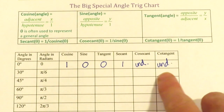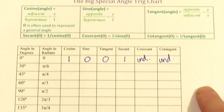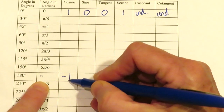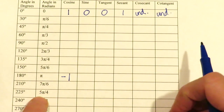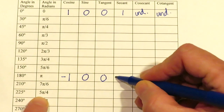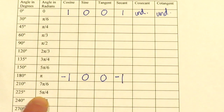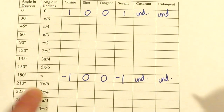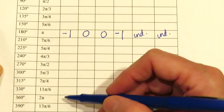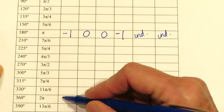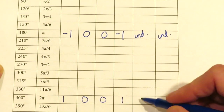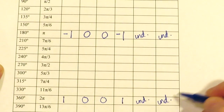Another angle similar to zero is 180°. At pi, cosine is negative one because you're on the negative side of the x-axis, but sine is still zero because you're on the x-axis. Tangent is zero. The reciprocal of negative one is negative one. Dividing by zero is still undefined. And at 360°, a full rotation brings you right back to where you were at zero: x is one, y is zero, tangent is zero, secant is one, and cosecant and cotangent are undefined.